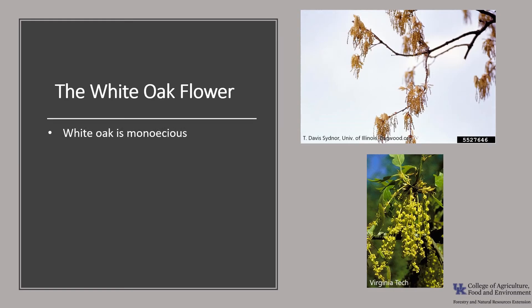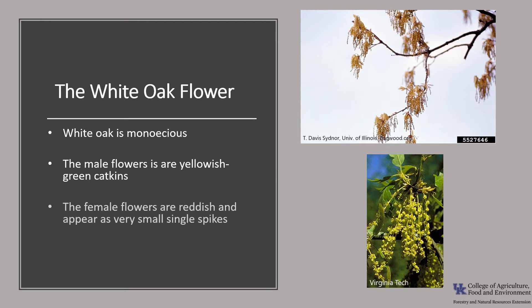White oak flowers are monoecious — meaning one house — which means a tree will have both male and female flowers. The male flowers are yellow-green, born in a drooping slender catkin that's about two to four inches long. The female flowers are reddish green and appear as very small single spikes. The flowers emerge with the leaves in mid-spring.